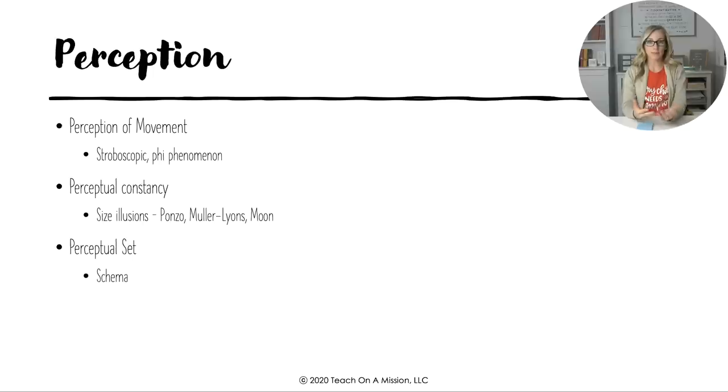And then there's perceptual set, making sure you understand that cultural context is really important in perceptual set and that what we have been exposed to throughout our lives very much determines how we are able to perceive different things, and having examples of those is really important. So I would encourage you to look back in those notes about how culture influences those as well as schema.